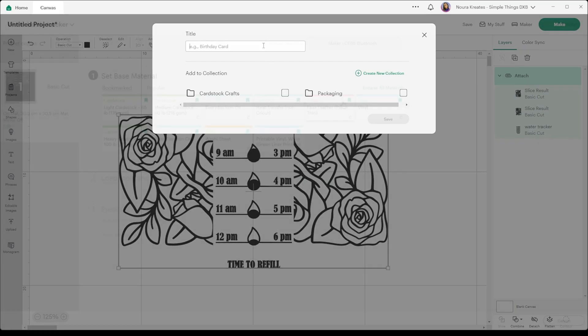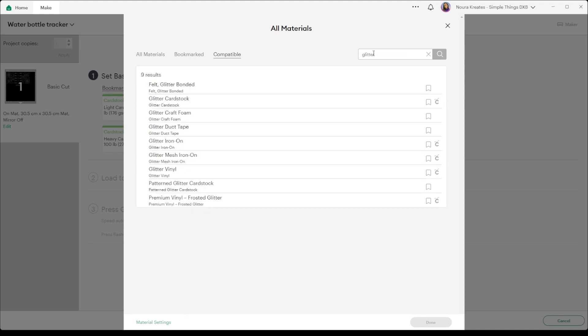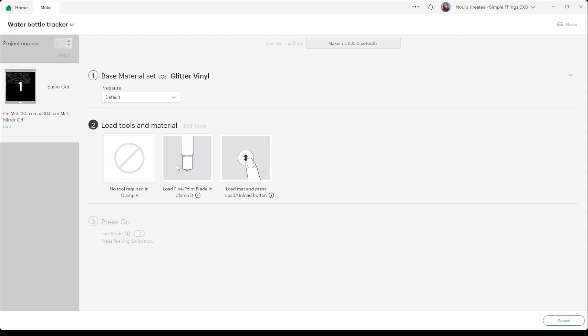The vinyl we're using is glitter, so I'm just going to use the default glitter vinyl. So I'm just going to click on that and I will keep the pressure as default.